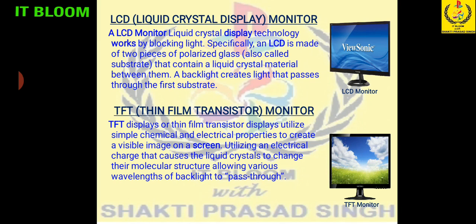Next is the thin-film transistor monitor. A TFT uses chemical and electrical properties to create a visible image on the screen. An electric charge strikes on the surface hitting different molecular structures, and light of various wavelengths passes through and scatters clearly onto the screen. The pictures on a TFT screen are more clear than on an LCD, and on the TFT we can view the output from a wider angle compared to the LCD.